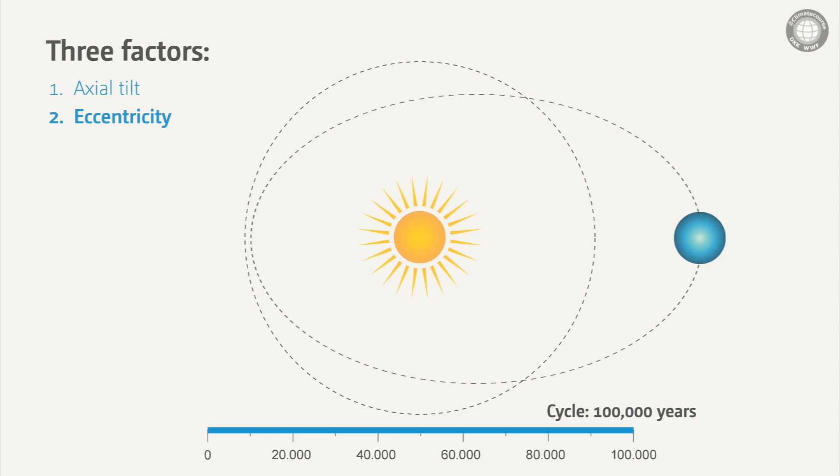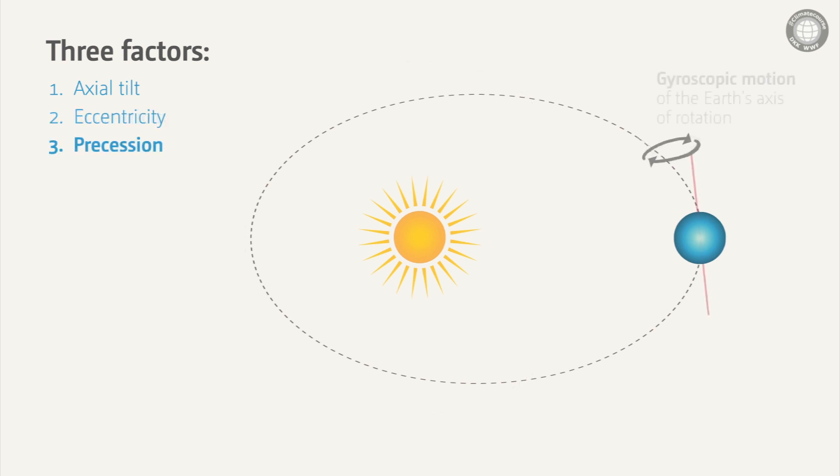The third factor is what we call precession, which is the wobble of the Earth on its own axis of rotation. The period of precession is approximately 21,000 years. You can comprehend this if you imagine a spinning top.